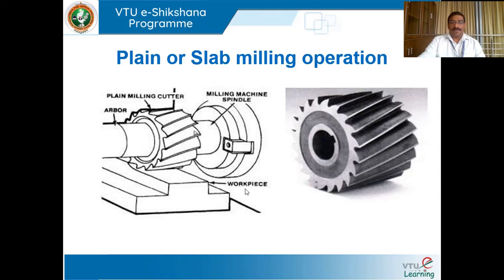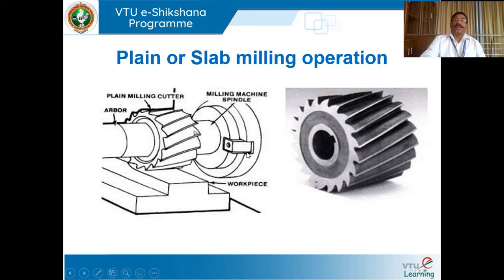Plain milling or slab milling uses a milling cutter mounted on the arbor of a horizontal milling machine. The cutter is a plain milling cutter — a multi-point cutting tool with multiple cutting edges around its periphery. It has a circular hole and a keyway running throughout its length. The arbor also has a corresponding keyway, and when a key is inserted between the two aligned keyways the milling cutter is locked to the arbor.